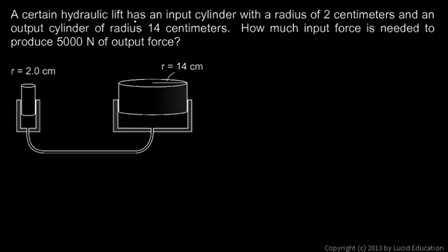Now the second problem. We're told a certain hydraulic lift has an input cylinder with a radius of 2 centimeters and an output cylinder with a radius of 14 centimeters. So this time we're given the radius of each one, not the area. It's the area that matters, so we will need to calculate the area for each of these. There are two areas here, so we'll do two separate area calculations.